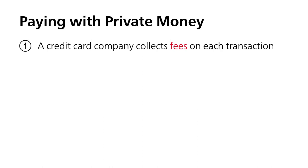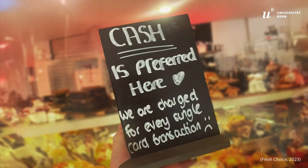Paying with private money is different from paying by cash. First, a credit card company collects fees on each transaction it executes. Importantly, the amount of the fees is determined by the companies themselves and depends on the level of competition between the firms. The fact that many credit cards offer points or even cash for using them suggests that those transaction fees might be too high. Customers don't pay these transaction fees, but sellers do. And as you can see from this sign, they are not too happy about it.